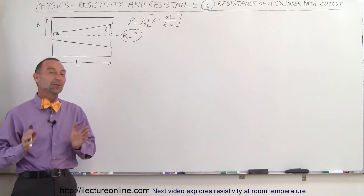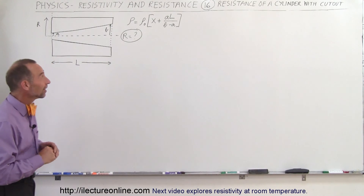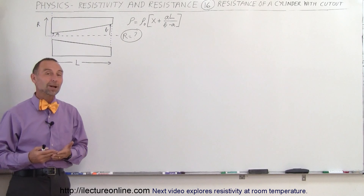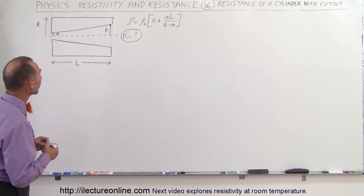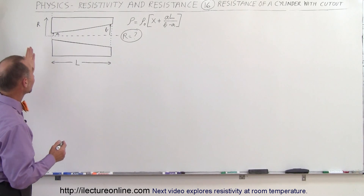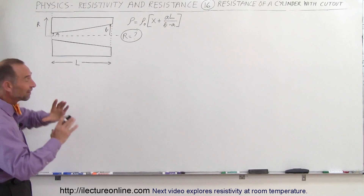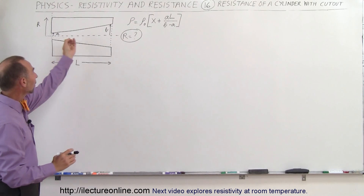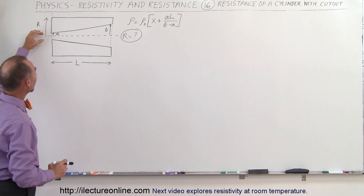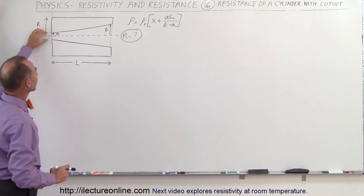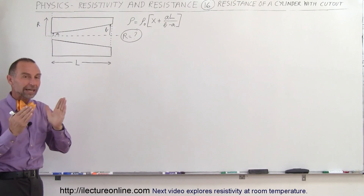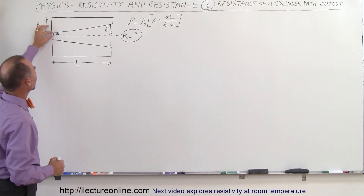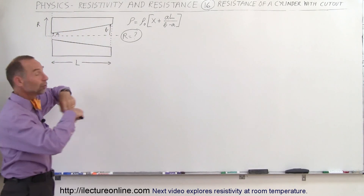Welcome to ElectronLine. We're going to see a rather challenging problem. We're trying to find the resistance of a cylinder, and this is indeed a cylinder, but there's a cutout — and the cutout is not a cylinder itself, it's a truncated cone. The radius at the top is A, and the radius at the back is B.